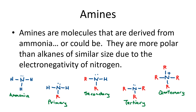Amines are molecules that look like they could have come from ammonia. There's ammonia — it's got NH₃. Now if you stick that ammonia onto anything else, what you have is a primary amine. R represents the rest of the molecule, so if you see an N with two H's sticking off, that's a primary amine.